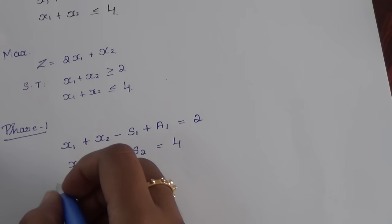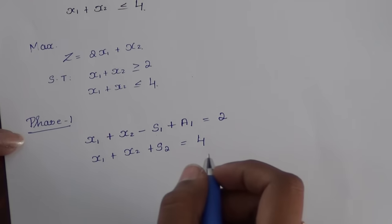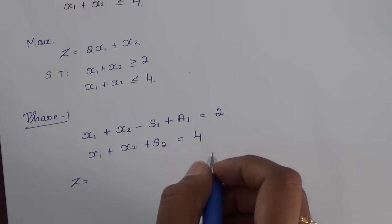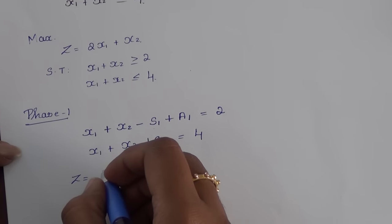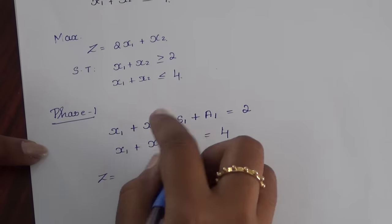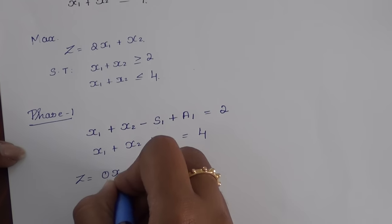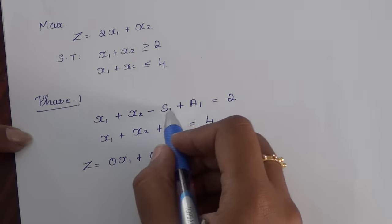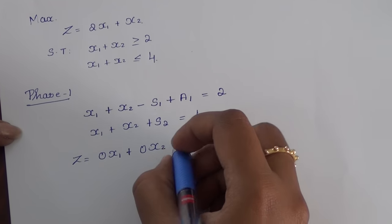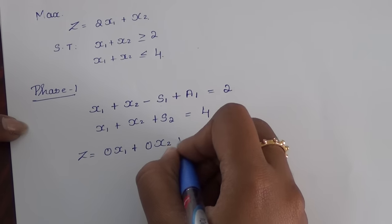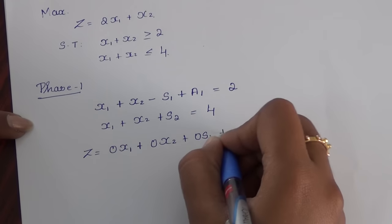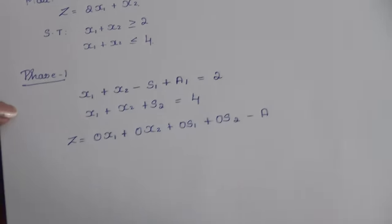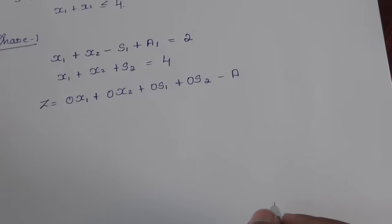Going to the objective function for Phase 1, I will use the coefficient of all variables as 0 — initializing with 0. Variables x1, x2, s1, s2, and a1 all have coefficient 0. As usual, I will subtract my artificial variable in the objective function. Now going on to the tabular column.